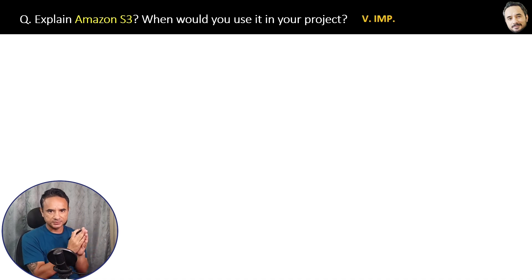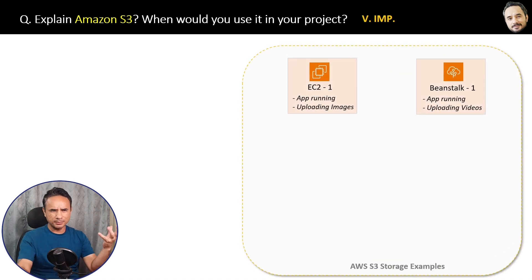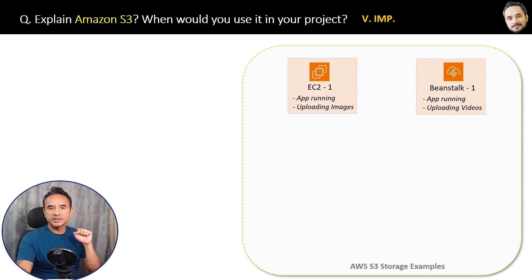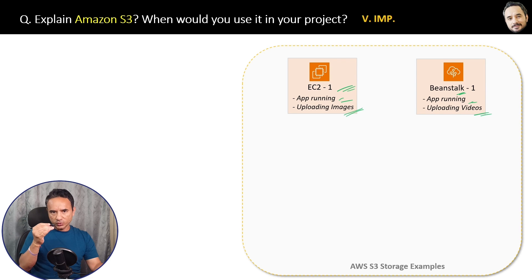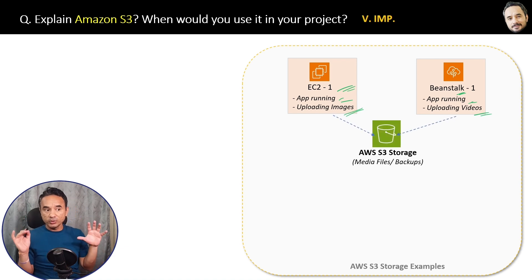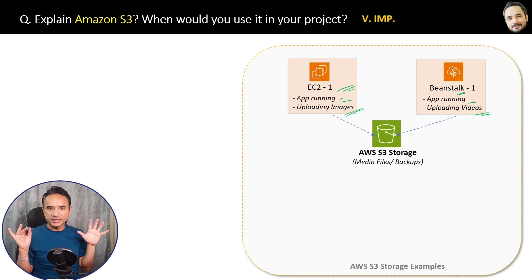From the book: explain Amazon S3 storage — when would you use it in your project? Let me explain with the help of an example. Suppose you have some EC2 instances or Beanstalk instances where your applications are running. From EC2, users are uploading images; from Beanstalk, users are uploading videos and media files. These media files come to your application, and then the best place to store these files is in AWS S3 storage.